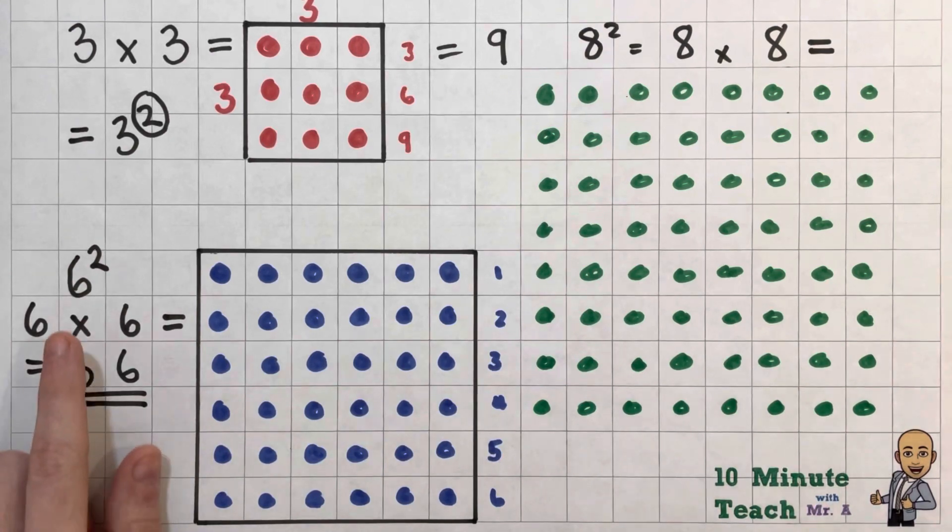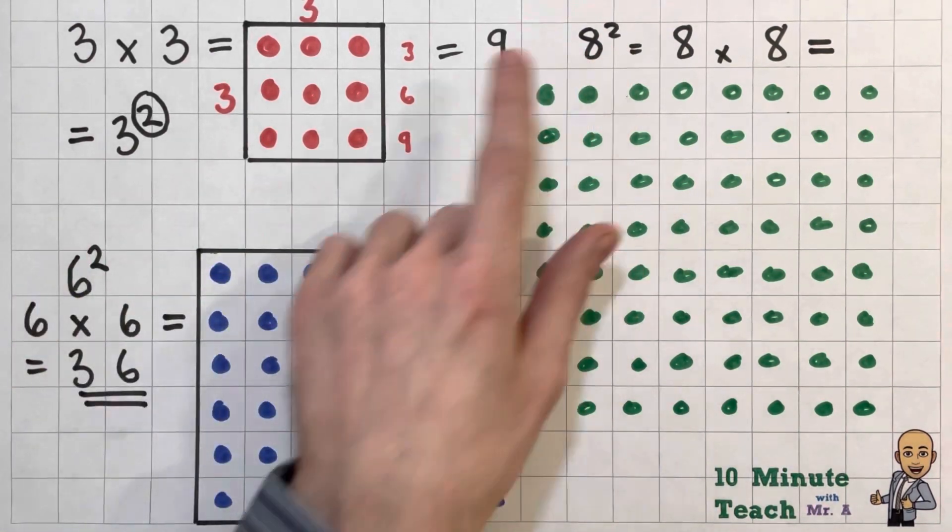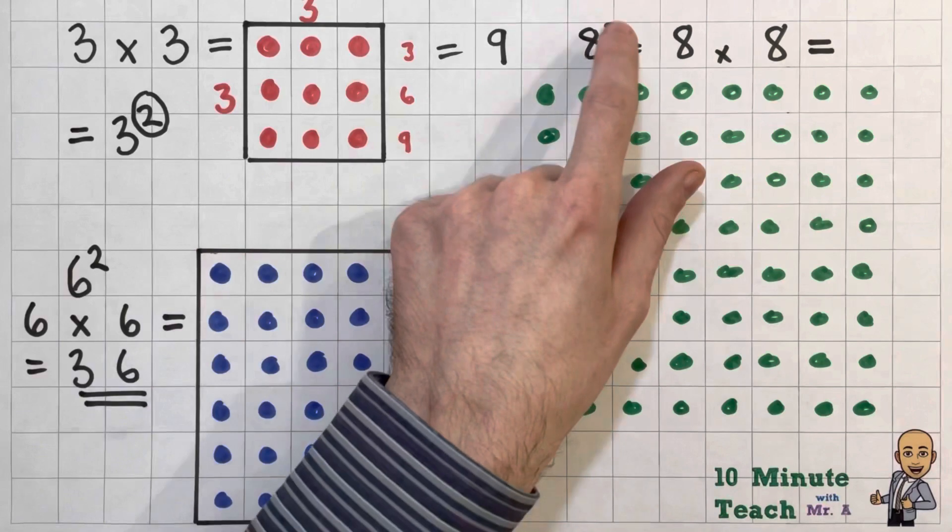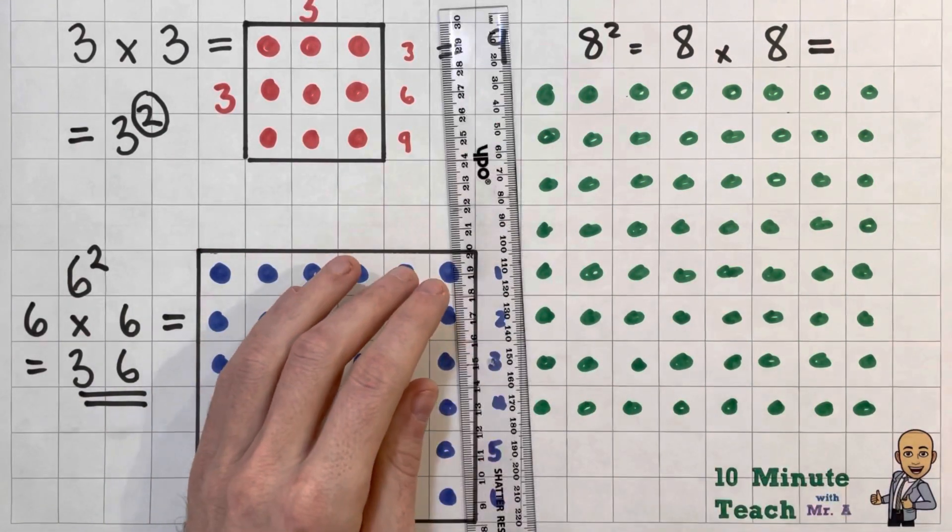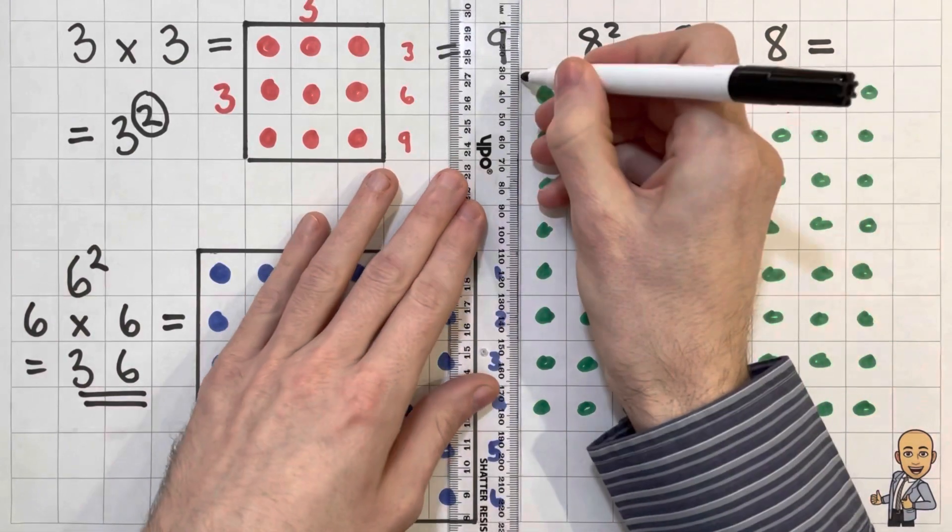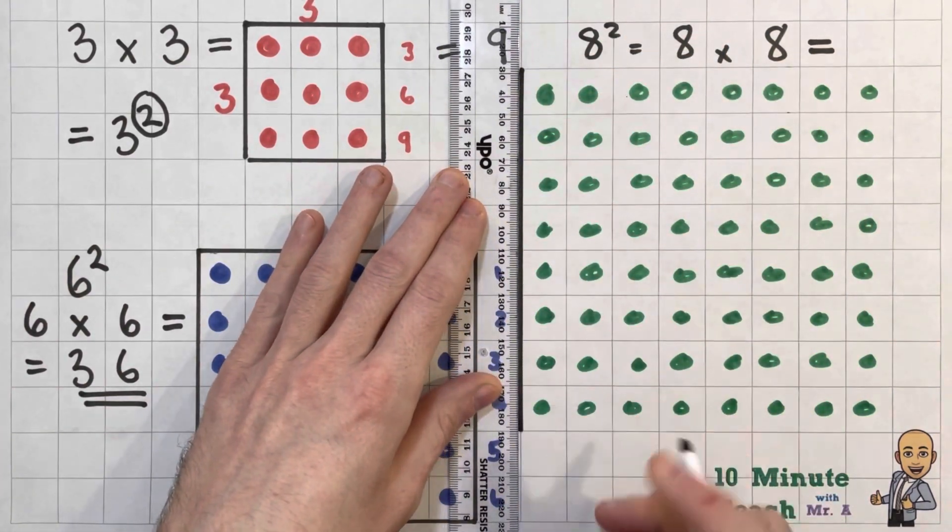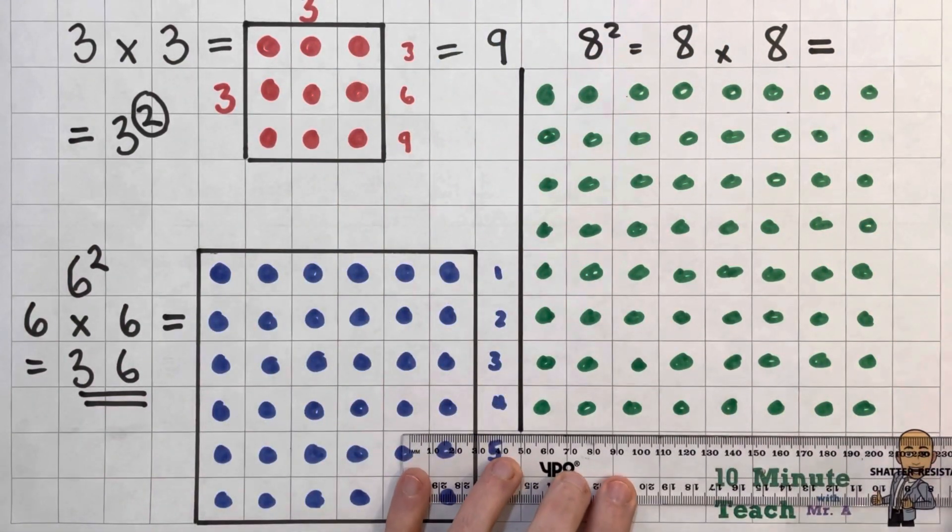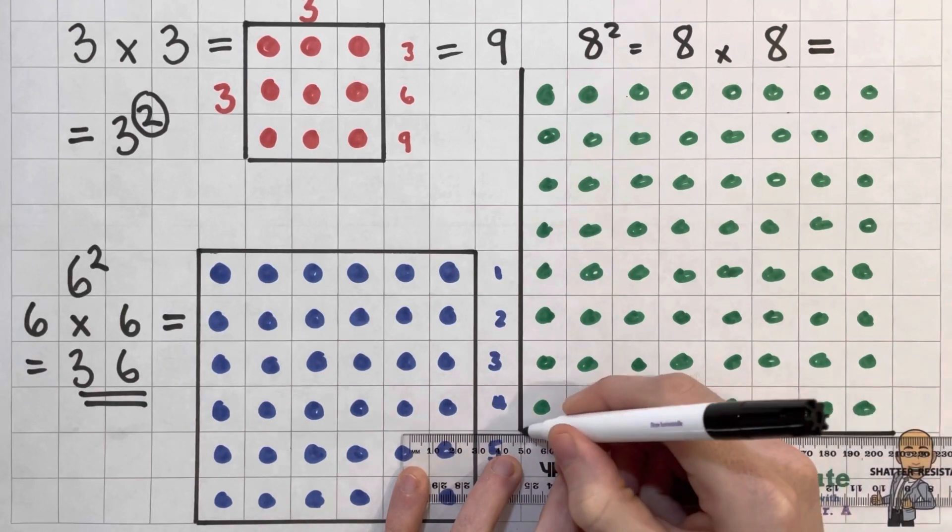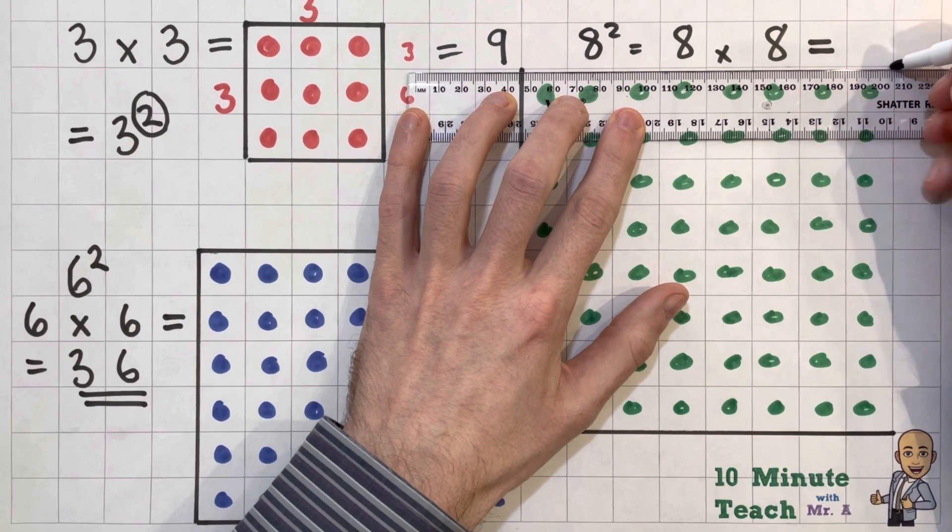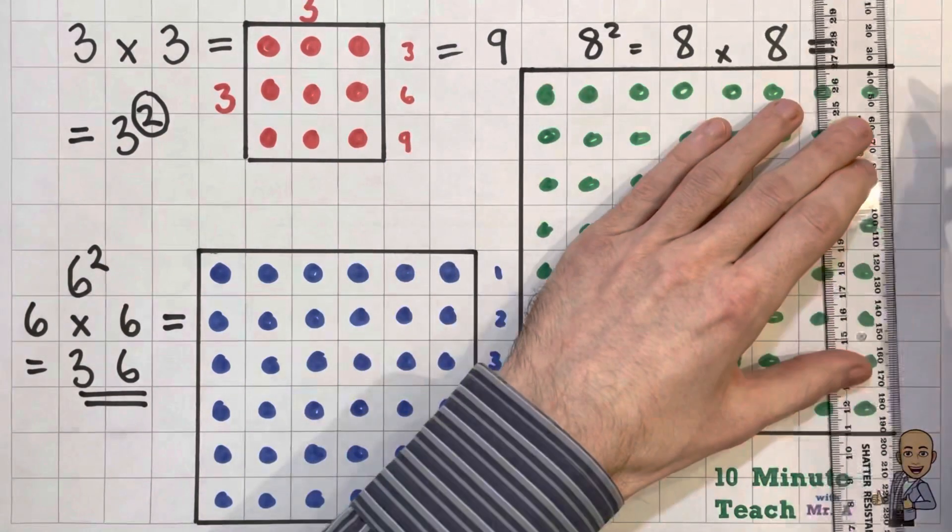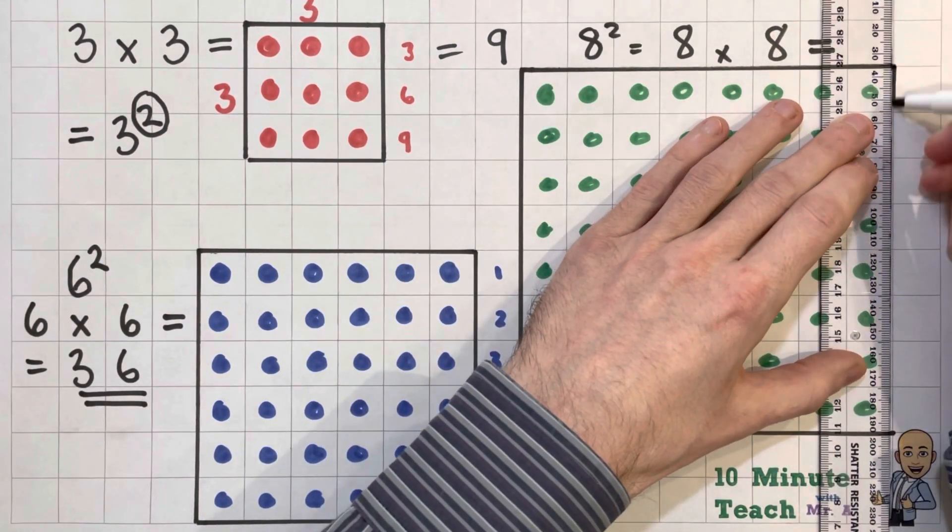And finally, we have our 8 eights. So as you can see, just by going up two more numbers multiplied by itself, the squares begin to get absolutely huge. And it just continues as you go through your times tables. And the main thing to remember is that that square number is called a square number because if you draw it out as an array, it actually makes a square.